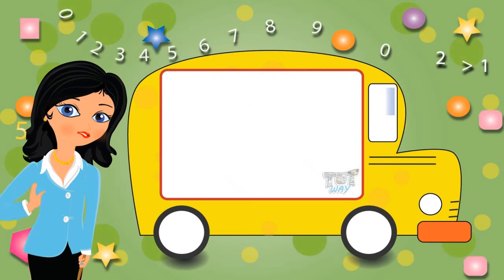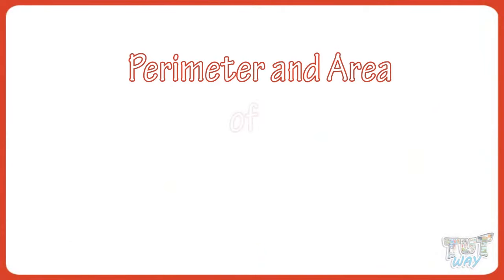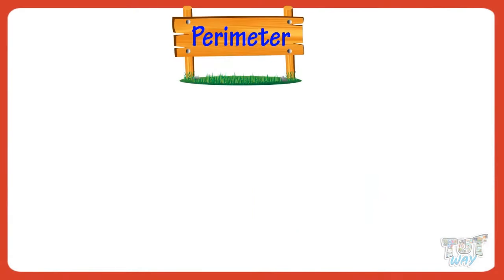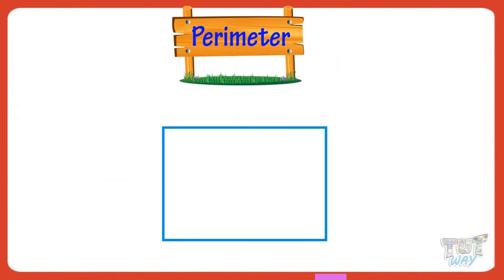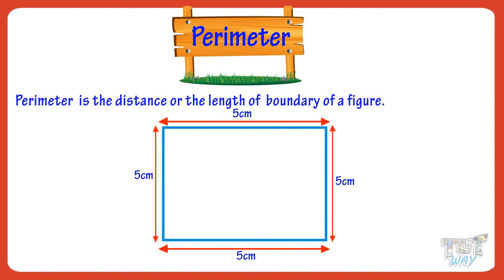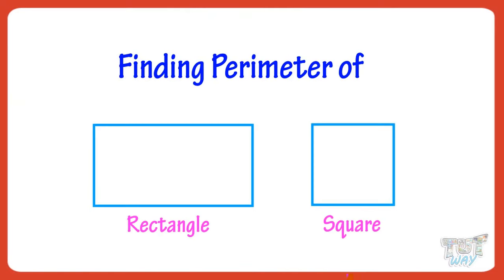Hi kids! Today we will learn how we can find the parameter and area of rectangle and square. So let's get started! Parameter is the distance or the length of the boundary of a figure. Today we will learn finding the parameter of rectangle and square.